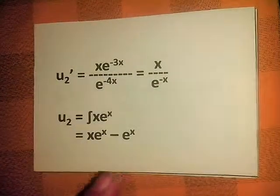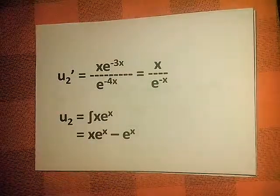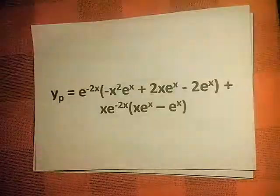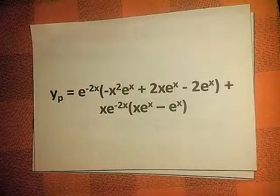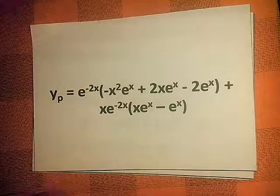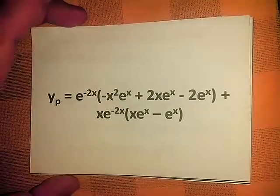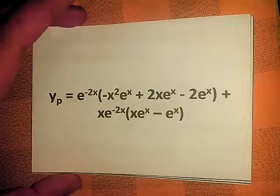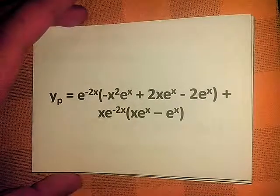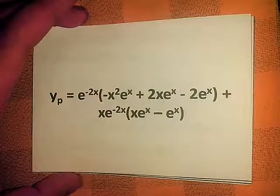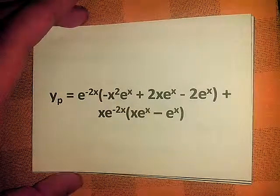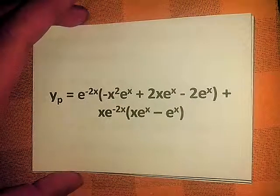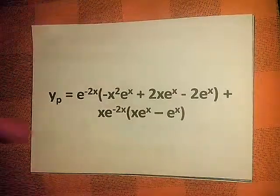Integrating u2', we get u2 = x·e^(-x) - e^(-x). Substituting these values into yp, we get yp = e^(-2x)·(-x²·e^(x) + 2x·e^(x) - 2e^(x)) + x·e^(-2x)·(x·e^(x) - e^(x)).